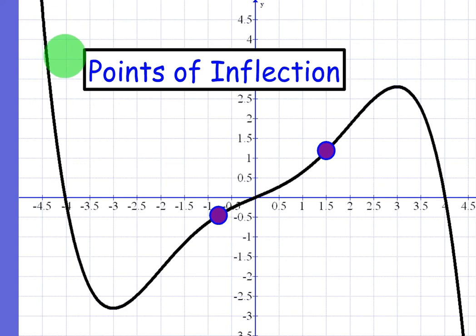Now that we've talked about concavity, let's talk about points of inflection, or simply inflection points. Here on this graph, we have two inflection points. We have to be thinking about what is an inflection point. I've kind of already alluded to it. Let's go ahead and talk about it.